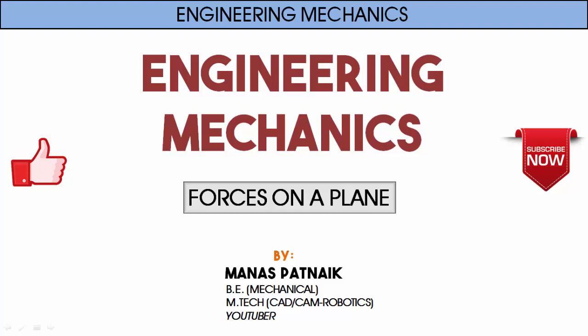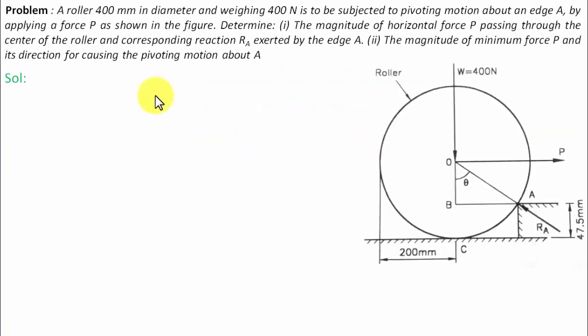Hi there guys, hope you're doing well. This is your friend and tutor Manas. So let's see what this problem has in store. Here we go. A roller 400 mm in diameter and weighing 400 newtons is to be subjected to pivoting motion about an edge A by applying a force P as shown in the figure.